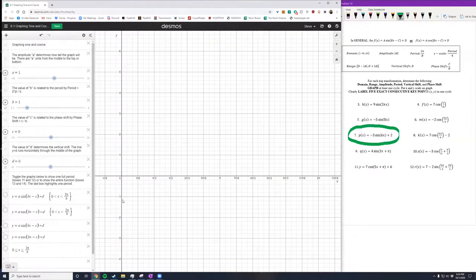All right, problem 7. We've got negative 3 sine of 6x plus 2. So if I look at what that graph is going to look like, I know that I want sine, so I'll turn on my graph of sine. A is negative 3, so I'll slide that down to negative 3. Notice that it has a vertical reflection so that graph has changed its orientation.